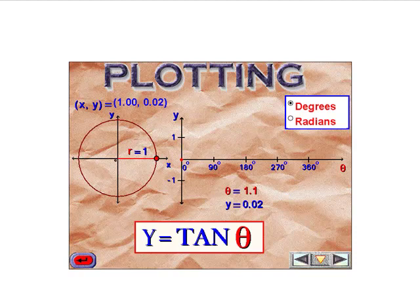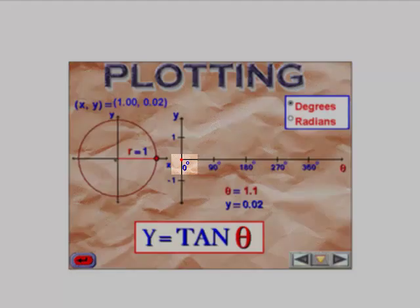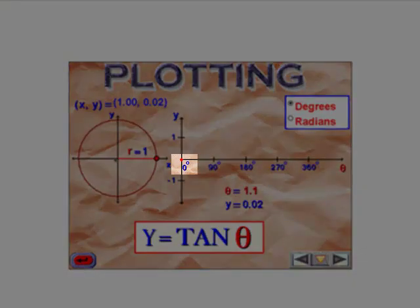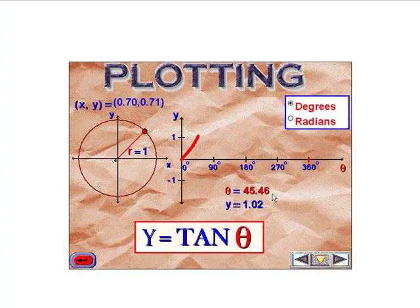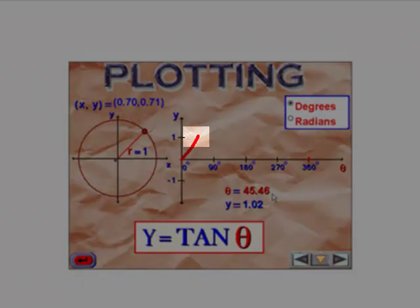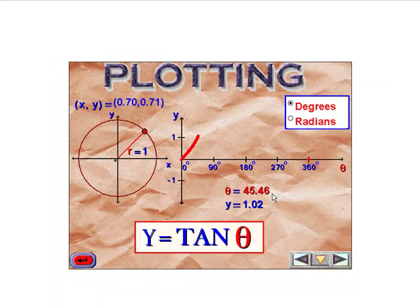If we start at 0 degrees, x is 1 and y equals 0. 0 divided by 1 is 0. The tangent of 45 degrees was exactly equal to 1. This is one of those special triangles you were supposed to memorize. So the tangent of 45 degrees is positive 1.